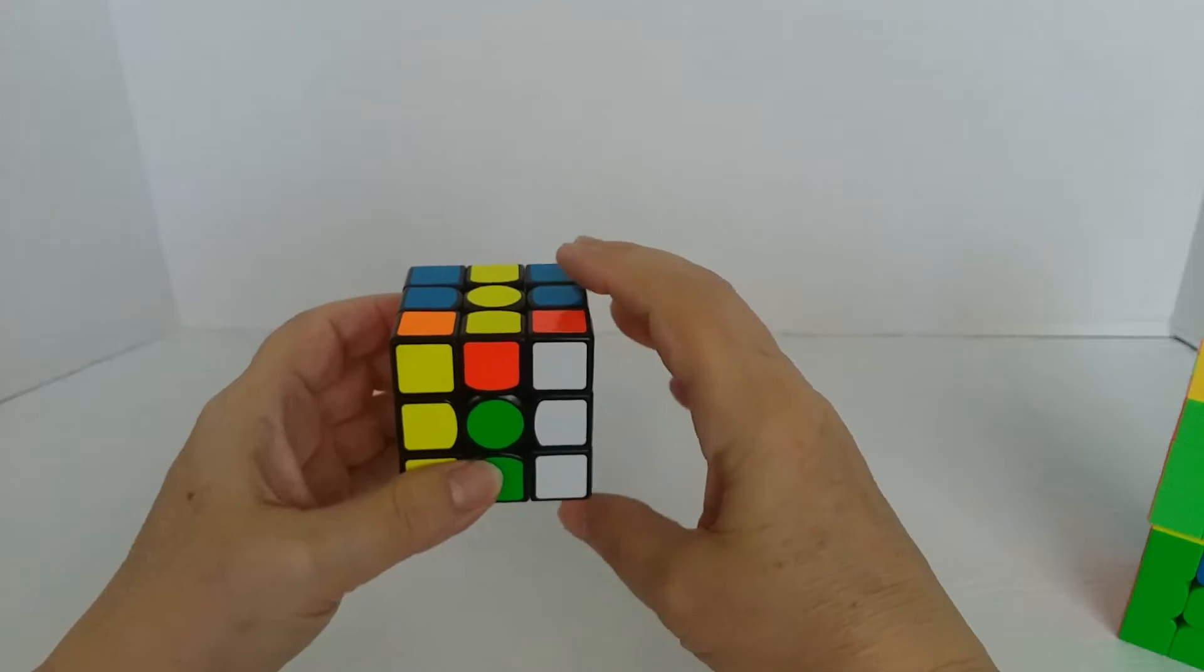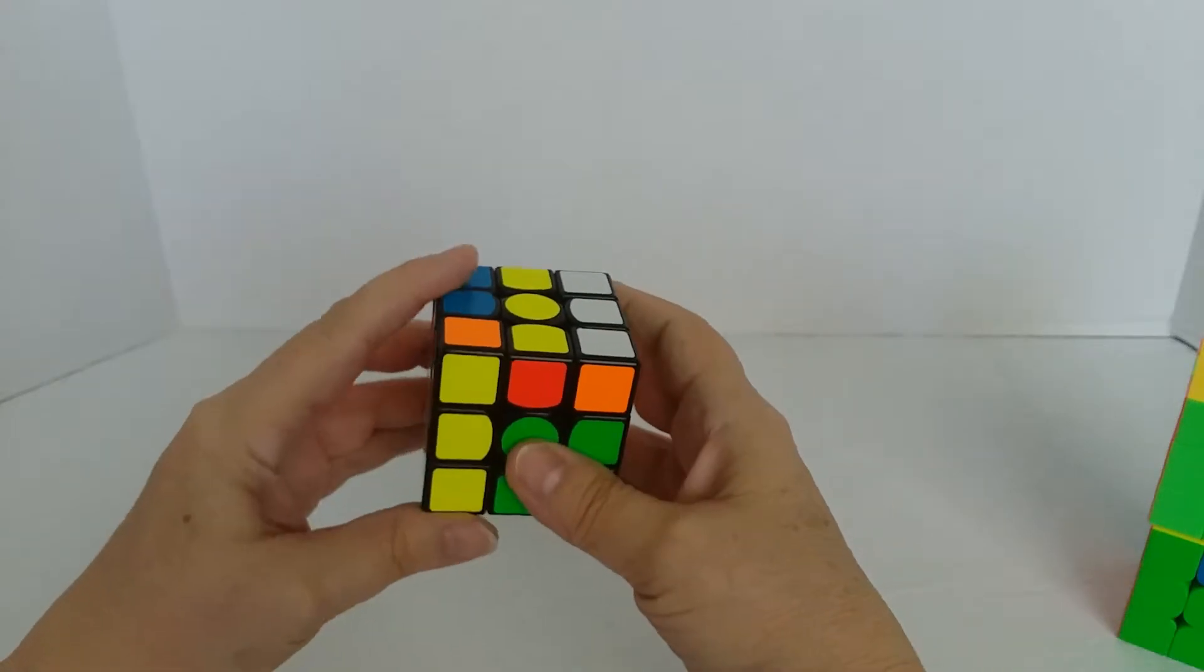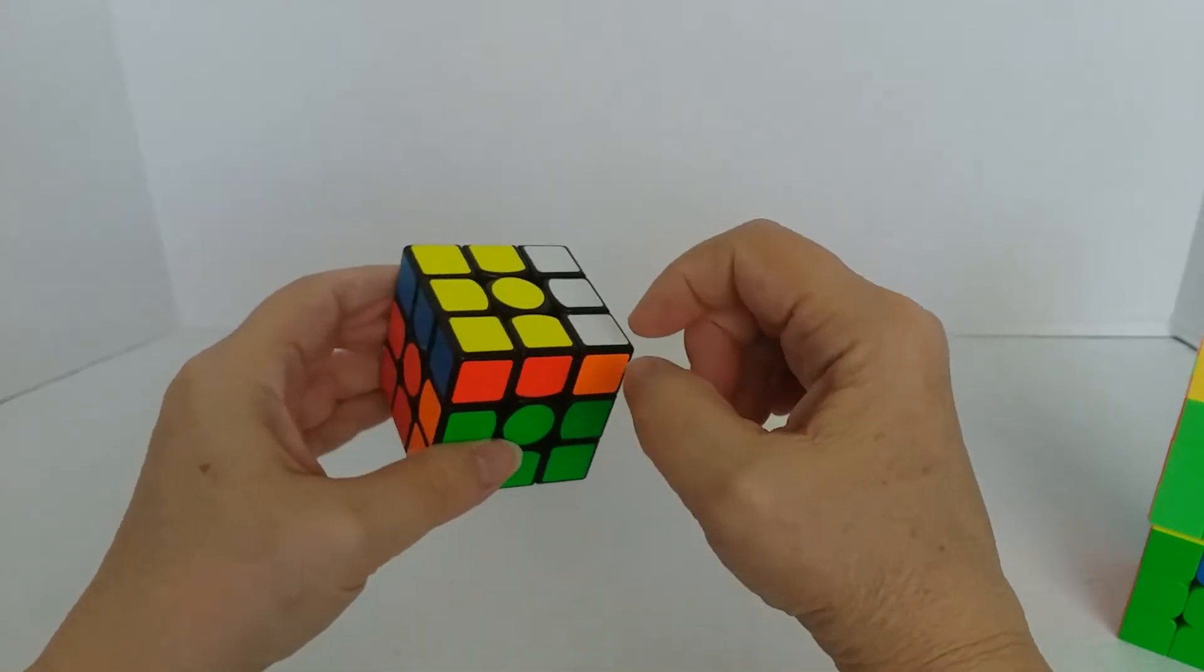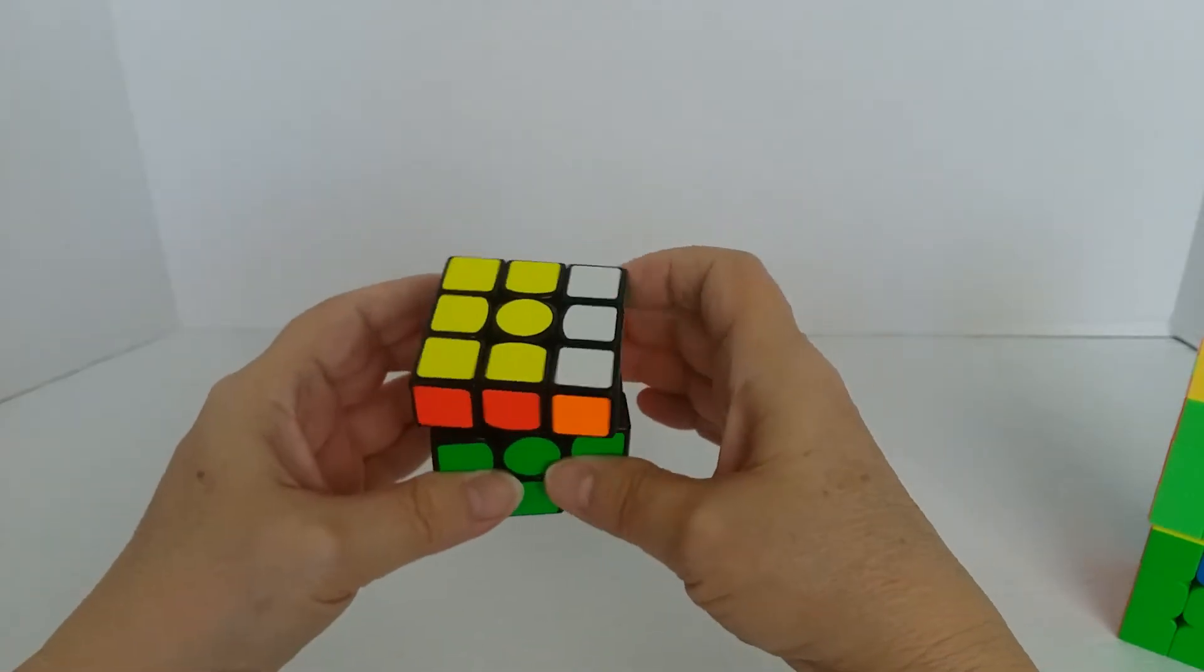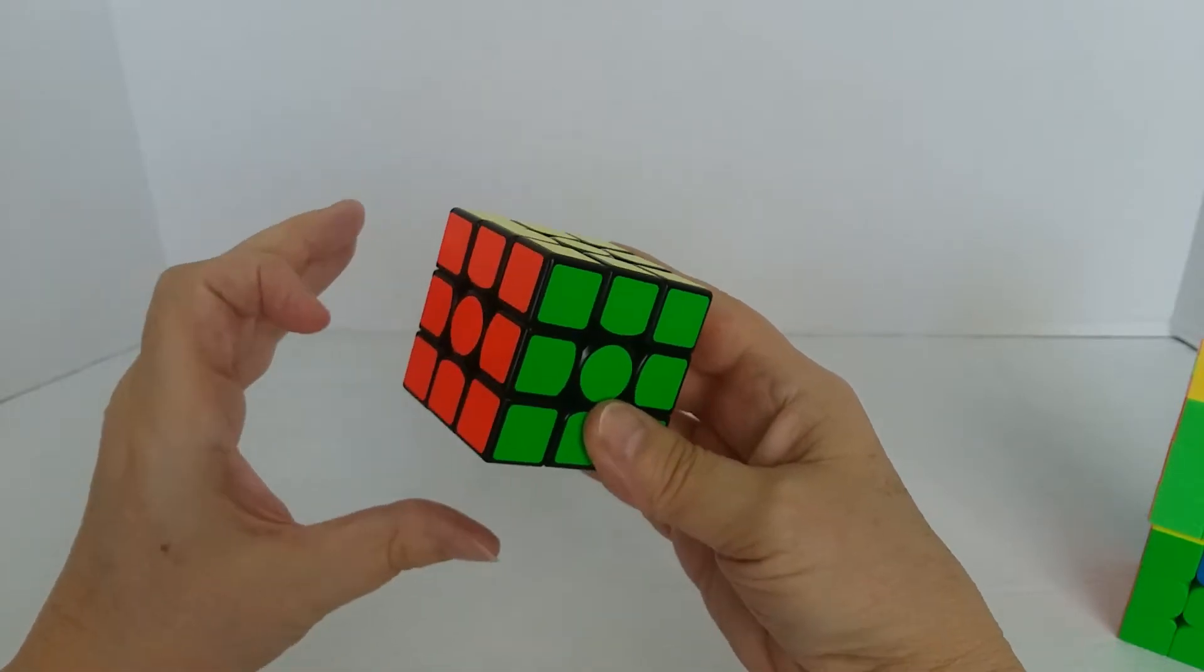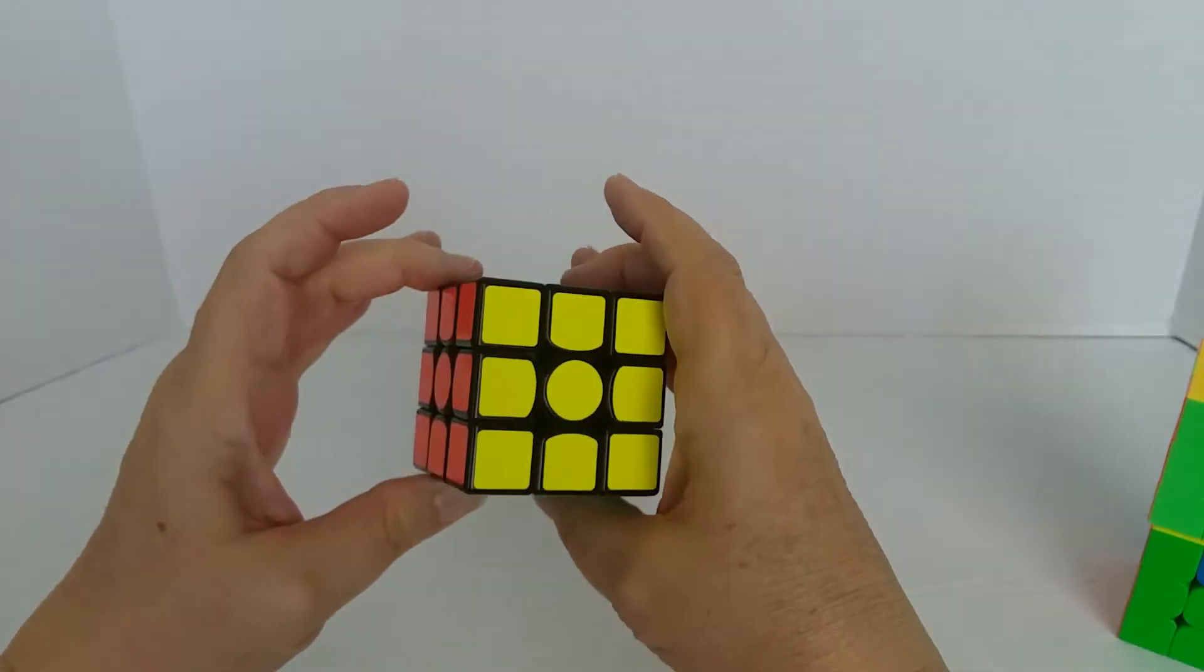And then I undo that by a right away from me and a left away from me. I spin the white back around because it's going to have to go down here. And I rotate the face. And that has solved that case.